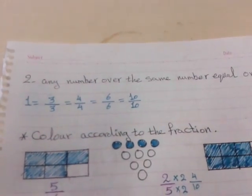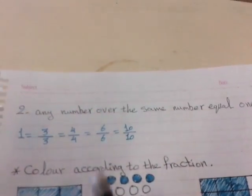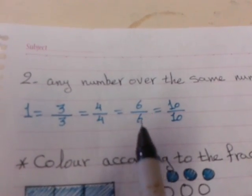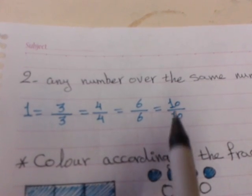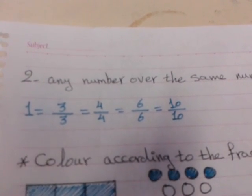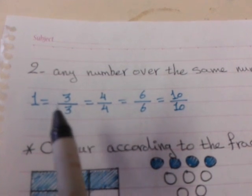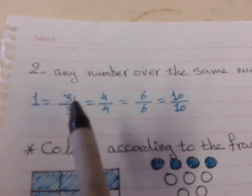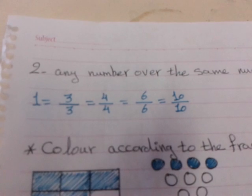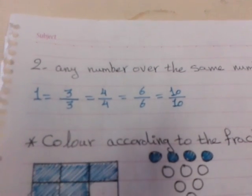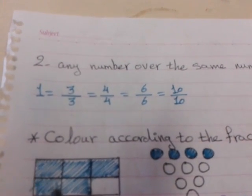The second note: any number over the same number equals 1. For example, 3 over 3 equals 1, 4 over 4 equals 1, 6 over 6 equals 1, and 10 over 10 equals 1. Why? Because a fraction is another name for the division sign. So 3 divide 3 equals 1, and any number divided by itself equals 1.